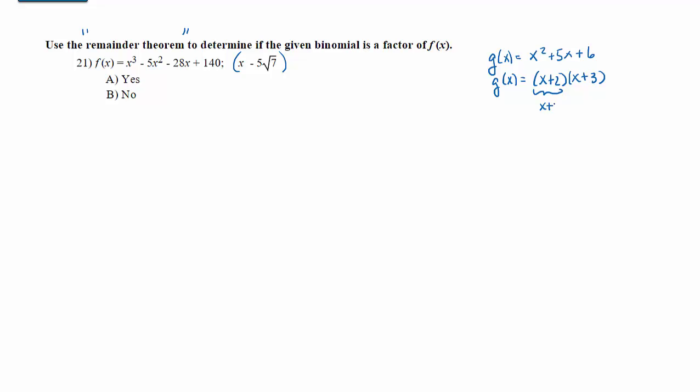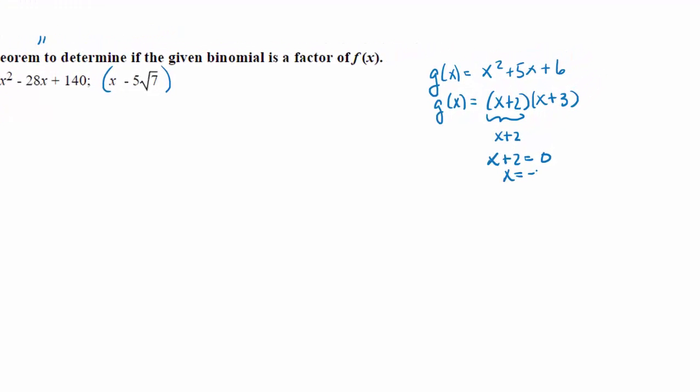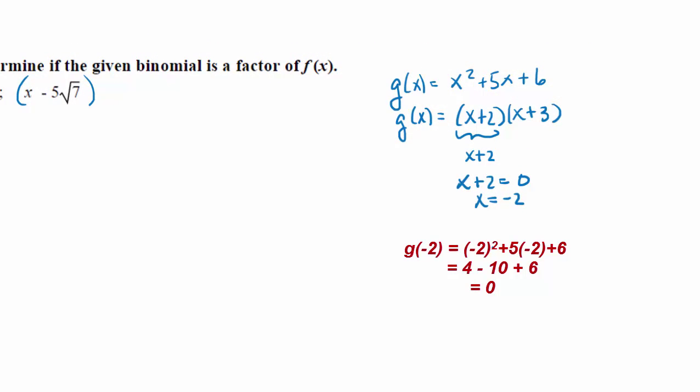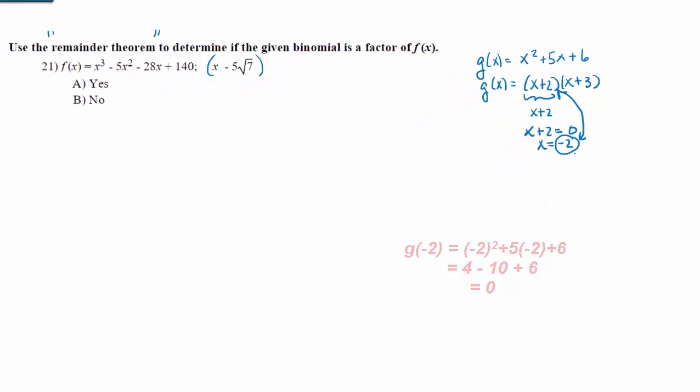The binomial x plus 2, for example, is a binomial factor of the polynomial function g(x). Because it's a factor of g(x), if we set x plus 2 equal to 0 and solve for x, giving us x equals negative 2, we know that negative 2 is a zero of this function. There's a direct relationship between the fact that x plus 2 is a factor and x equals negative 2 is a zero. In fact,